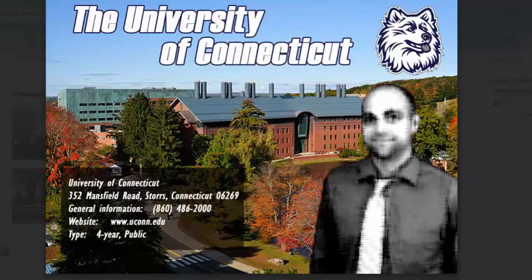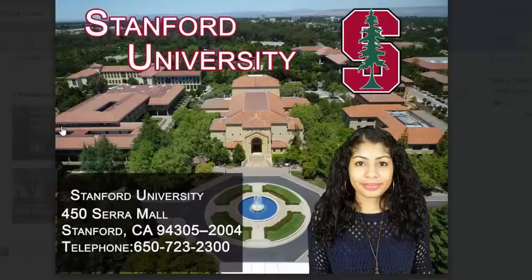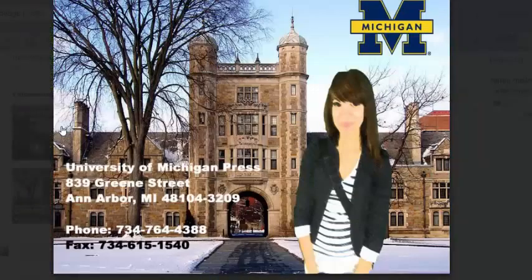In today's class, we're going to be creating marketing for one of the colleges participating in the March Madness basketball tournament. Here we have an example with an image of myself, the name of the school with a layer style — specifically stroke — the logo, and some key information with a backdrop created using the rectangular marquee and dropped opacity. We're going to be creating something similar to this. Here are examples of Indiana University, Stanford, UCLA, and Michigan.